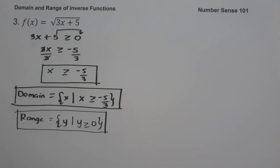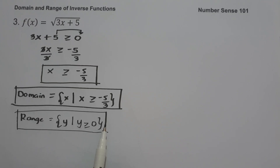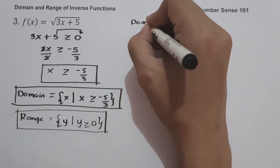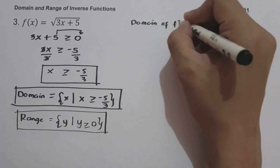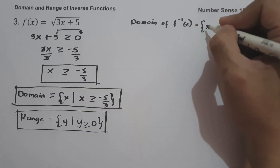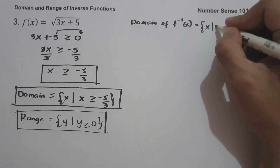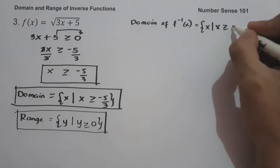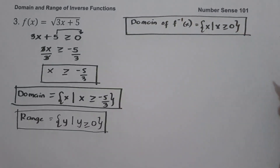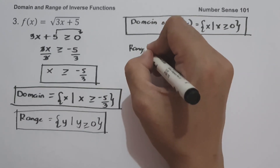To find the domain and range of the inverse function, always remember: the domain of the original function is the range of the inverse function, and the range of the original function is the domain of the inverse function. So the domain of the inverse function is the set of x values such that x is greater than or equal to zero.